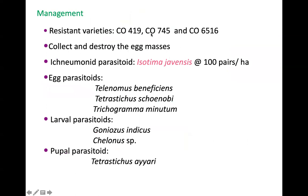Management of top shoot borer: grow recommended resistant varieties. Collect and destroy egg masses. Egg parasitoid Isotima javensis at 100 pairs per hectare. Additional egg parasitoids include Telenomus beneficiens, Tetrastichus spp., and Trichogramma minutum. Larval parasitoid Goniozus indicus and Chelonus spp. Pupal parasitoid Tetrastichus ayyari. These parasitoids are important to remember for competitive examinations.